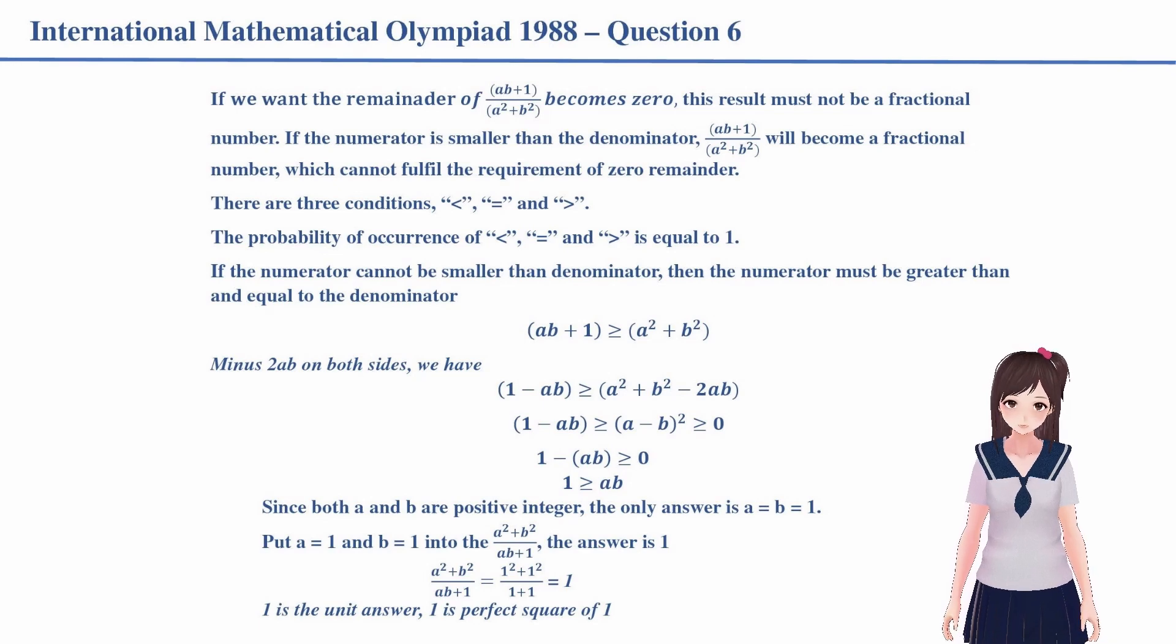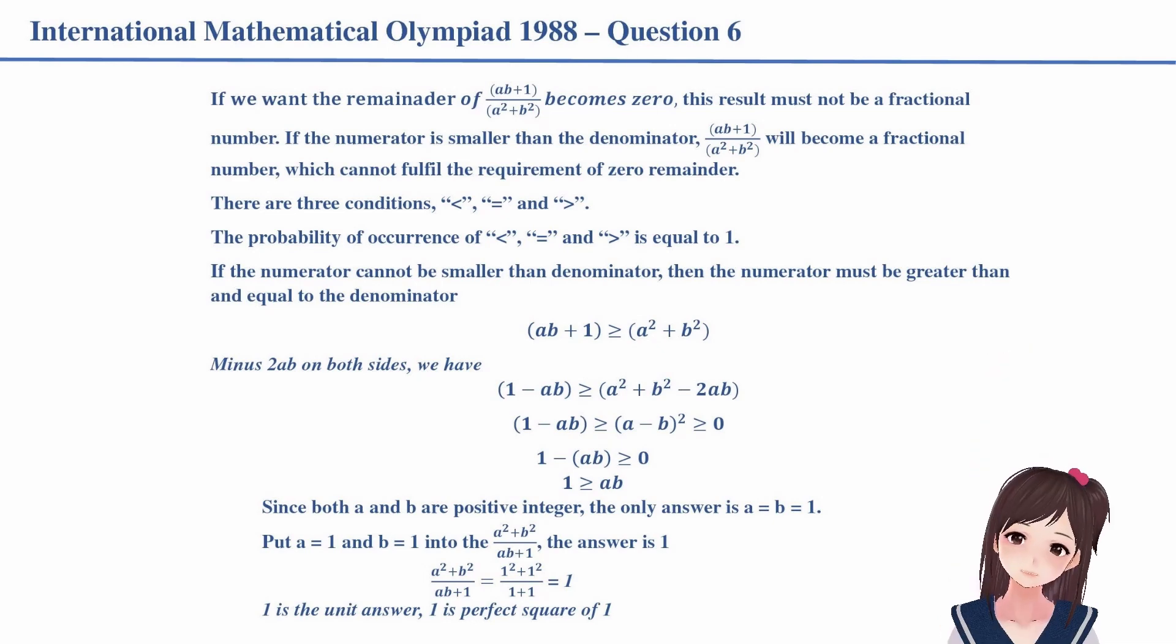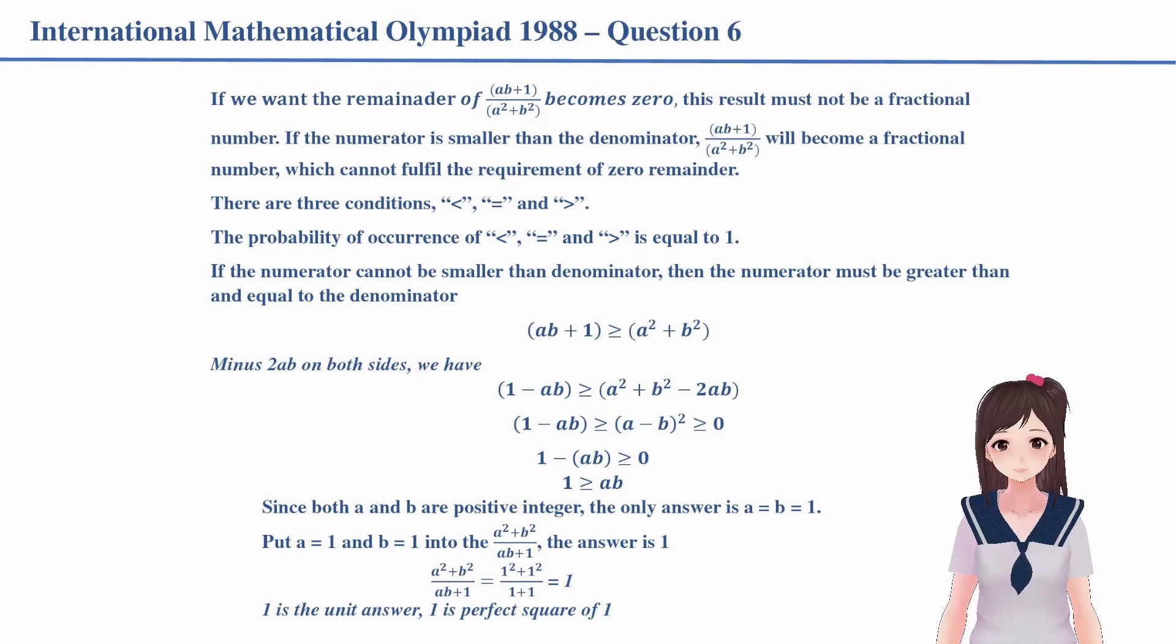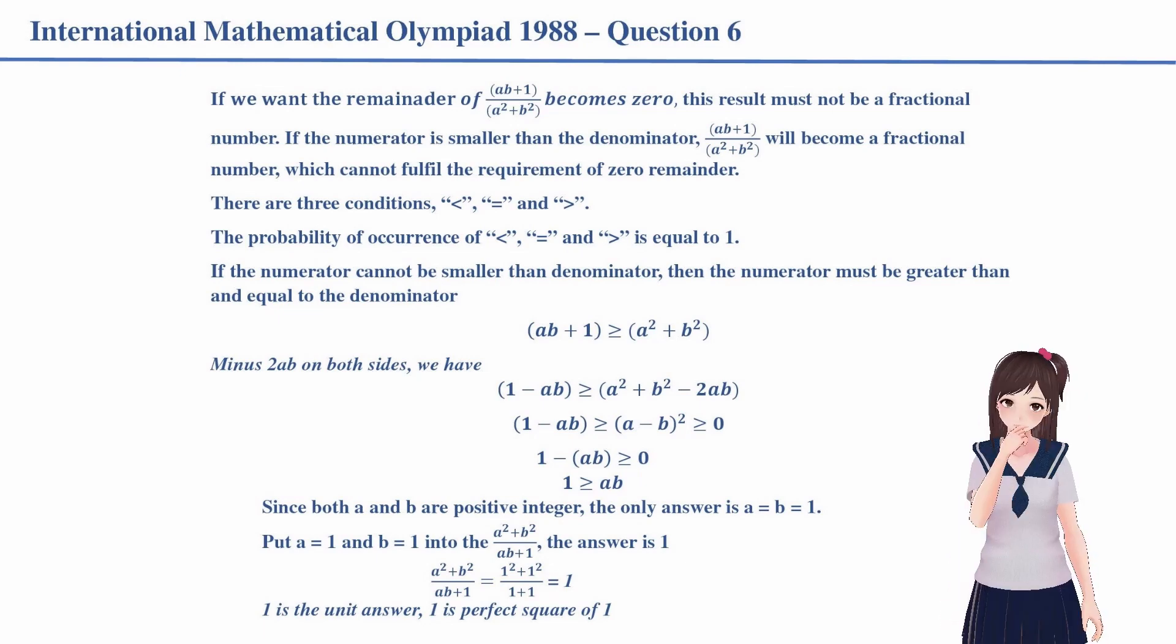And the right side becomes (A - B)². For (A - B)², this is greater or equal to 0. In conclusion, 1 - AB ≥ 0. Then we can see the product of A and B is less than or equal to 1.